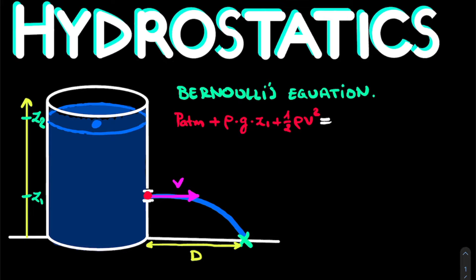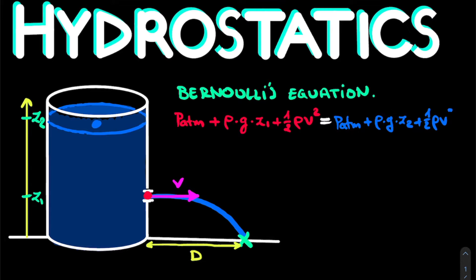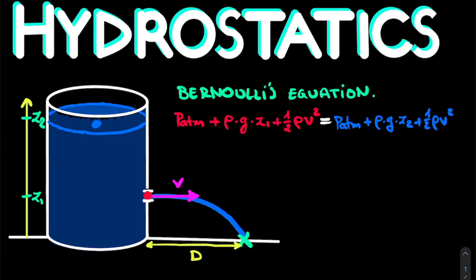Bernoulli's equation says this is equal to the same terms for the other point — the surface of the liquid. Here we again have atmospheric pressure, plus rho times g times z2 since we are at height z2, plus the kinetic term one-half times rho times v squared. We now solve this equation for the velocity at the hole — the velocity with which the water leaves the tank.